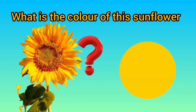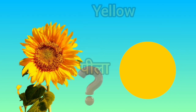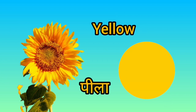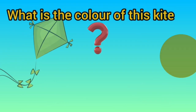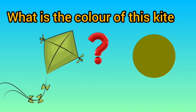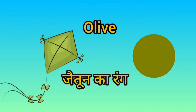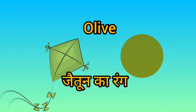What is the color of this sunflower? Yellow means Peela. What is the color of this kite? Olive means Chetun Karang.